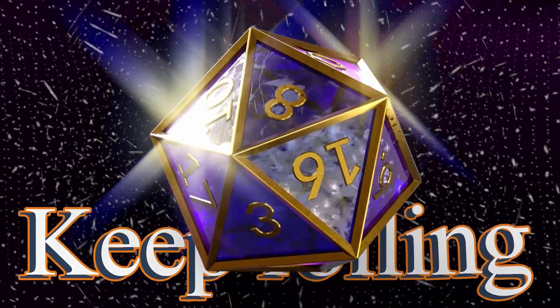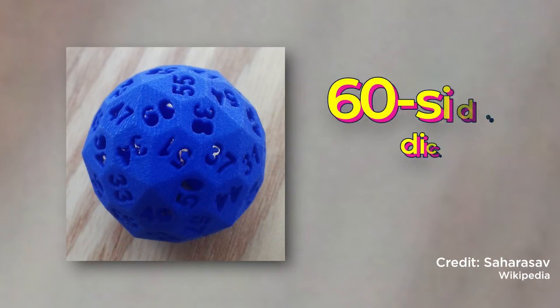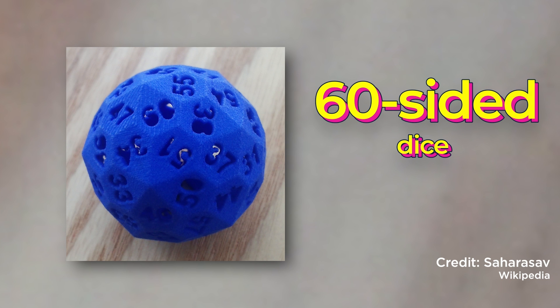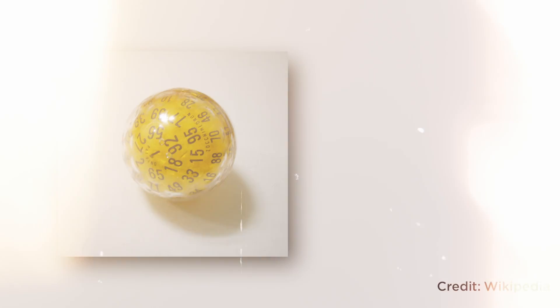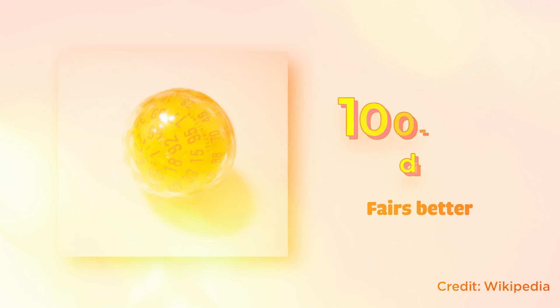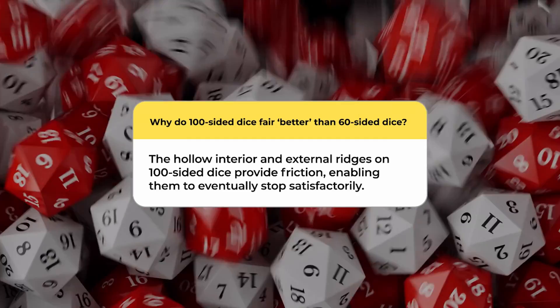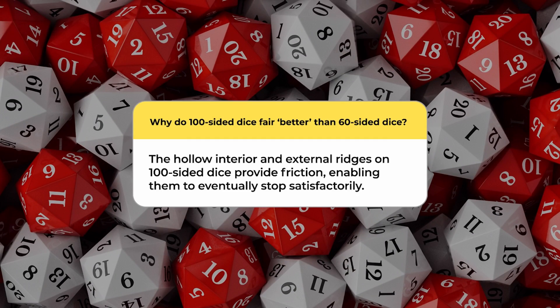For instance, a 60-sided die often falls short in game functionality due to its excessive momentum. A 100-sided die fares slightly better. Its hollow interior and external ridges provide friction, enabling it to eventually stop in a satisfactory manner.